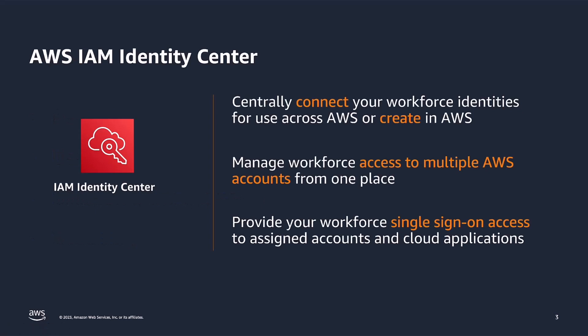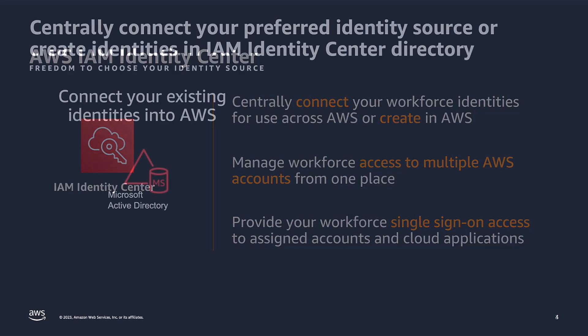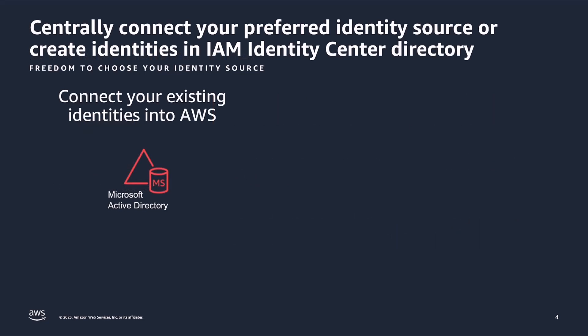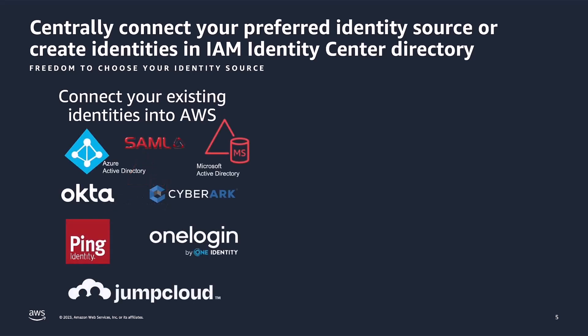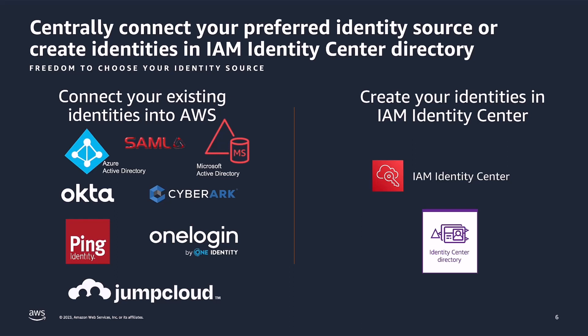AWS IAM Identity Center helps you to securely create or connect your workforce identities and manage their access centrally across AWS accounts and business applications. IAM Identity Center is the recommended approach for workforce authentication and authorization on AWS for organizations of any size and type. Irrespective of where a customer is in their cloud journey, AWS IAM Identity Center provides customers the freedom to choose their source of identity from Microsoft Active Directory, external IDP like Okta, Azure AD, Ping, and other SAML 2.0 providers as listed on the screen. Our customers can also choose to leverage the identity store inside AWS IAM Identity Center as a source for their identities.